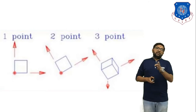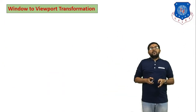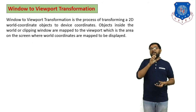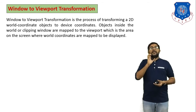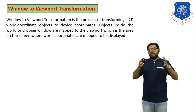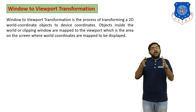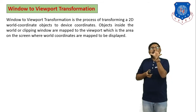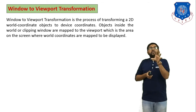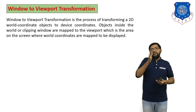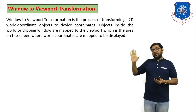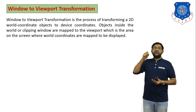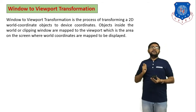Next topic is window-to-viewport transformation. If you have a very large object and want to analyze only a small portion of that object, you have to visualize just that selected portion. Window-to-viewport transformation is used when you want to select some specific portion of a large object and display it.